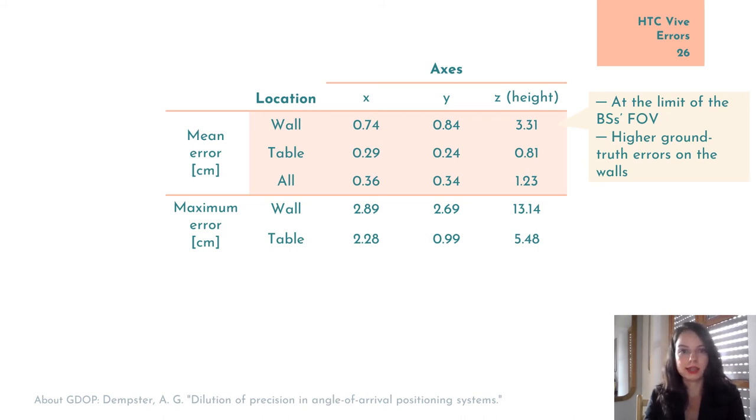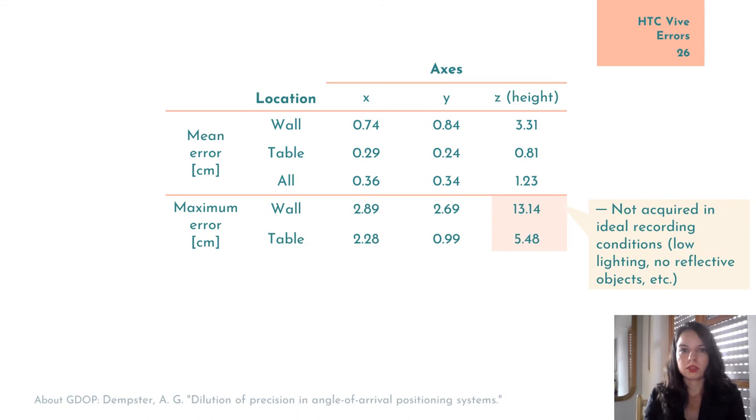Second, on the height axis, Z, errors were slightly higher, and this might be because of the height geometric dilution of precision on the Z axis, which isn't really unusual.